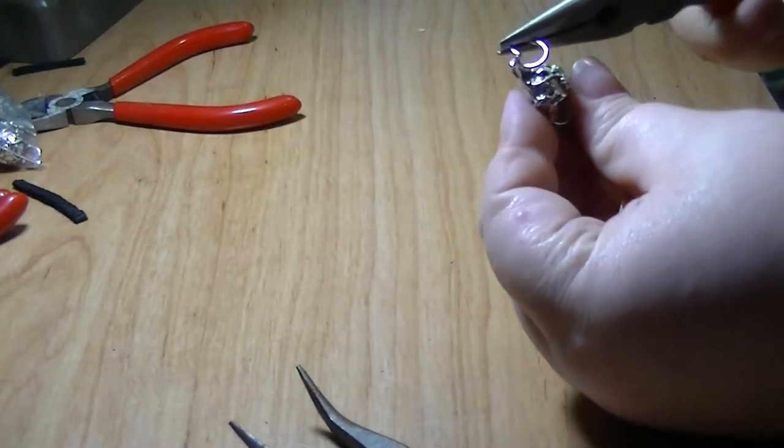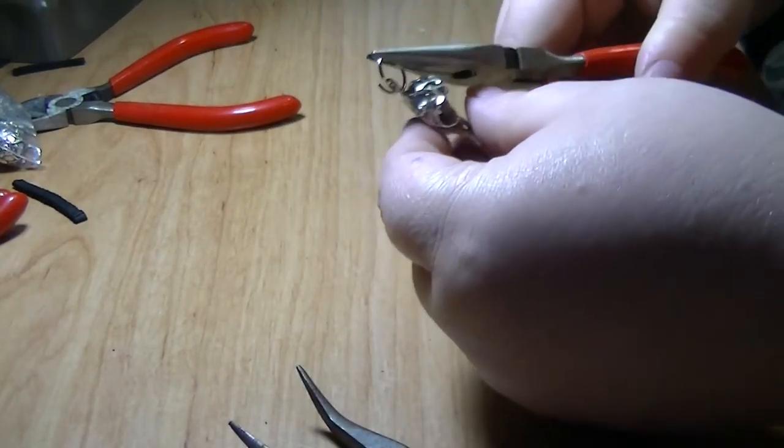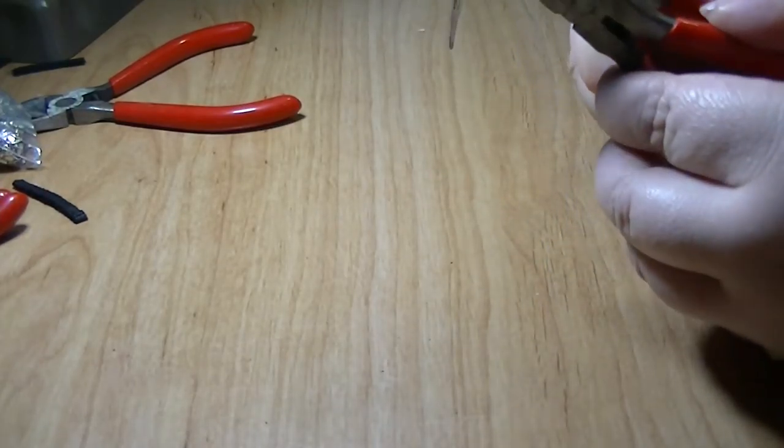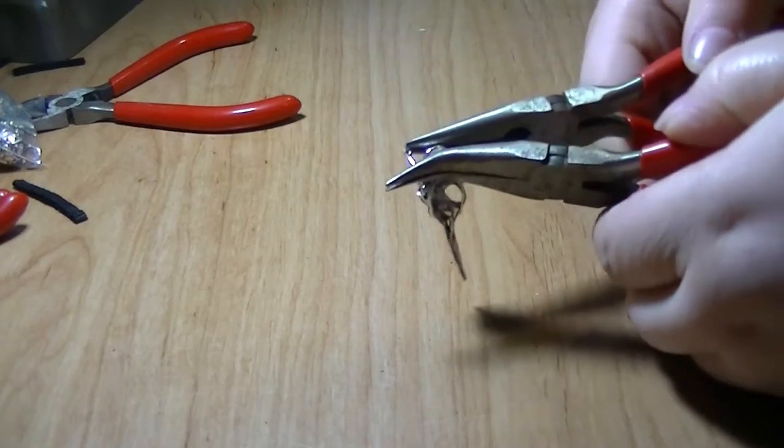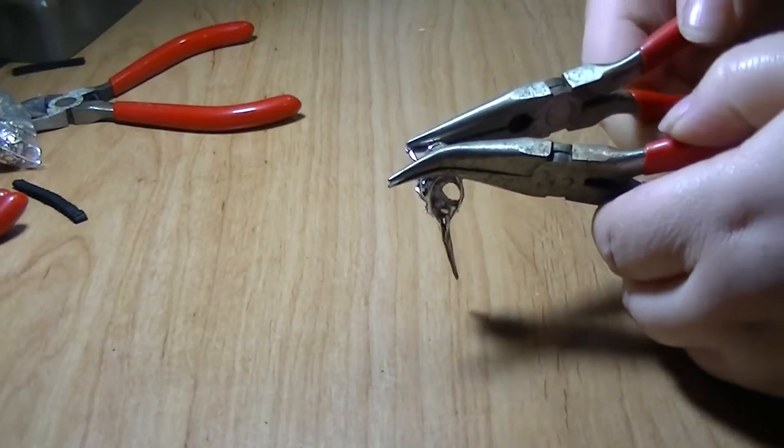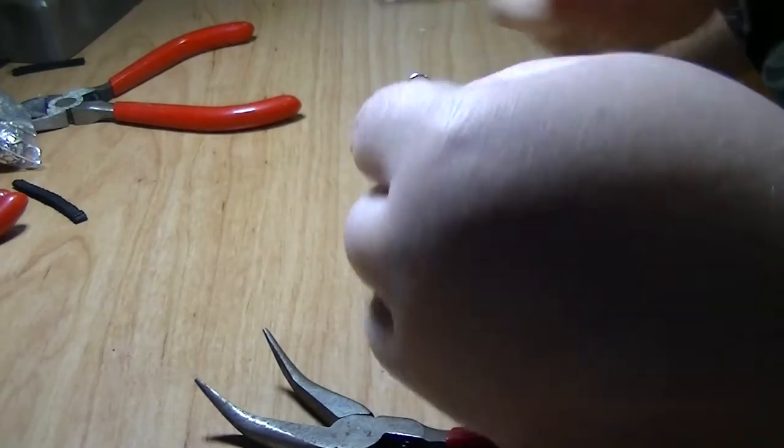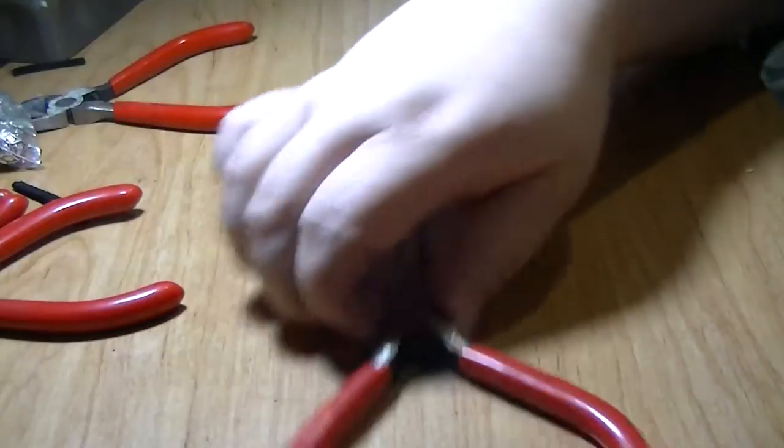And just slip it on over your little loop. I love these little bird skulls. And twist it back. And that's it. You just kind of line it back up. And you're done.